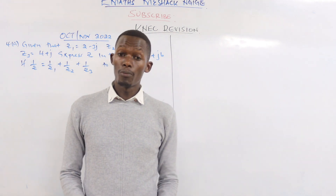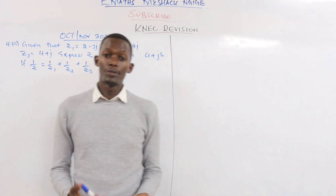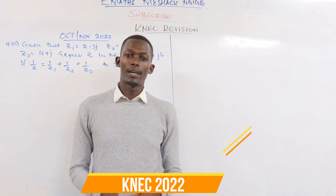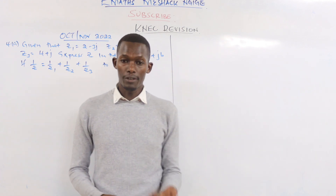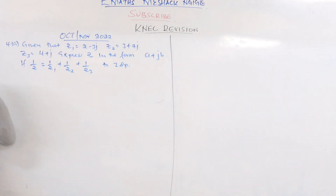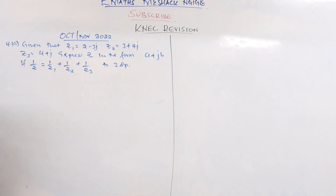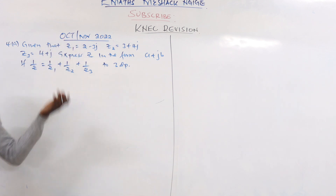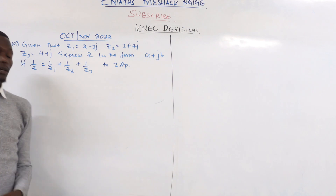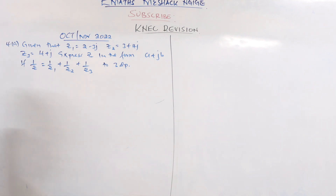Welcome again to today's lesson. We're going to be checking complex numbers — this is a revision lesson. Please remember to subscribe, share, and comment on how these lessons are helpful. We have a question from the October/November 2022 series: given z1 = 2 - 3j, z2 = 3 + 4j, z3 = 4 + j, express z in the form a + jb, where 1/z = 1/z1 + 1/z2 + 1/z3.